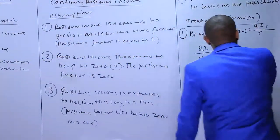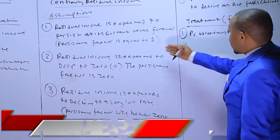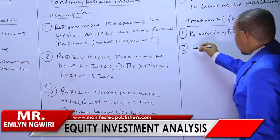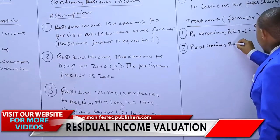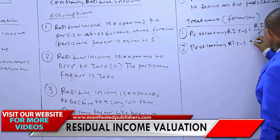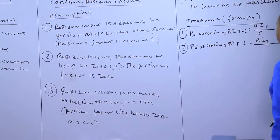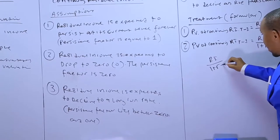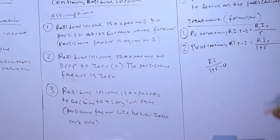Moving on to the second assumption: the residual income is expected to drop to zero, so the persistence factor in this case is zero. The present value of continuing RI at time t minus one is given as the residual income at time t discounted against one plus r, giving us RI over one plus r.